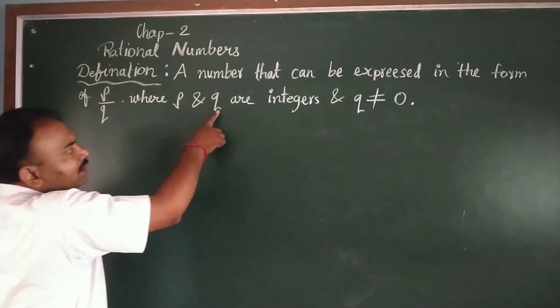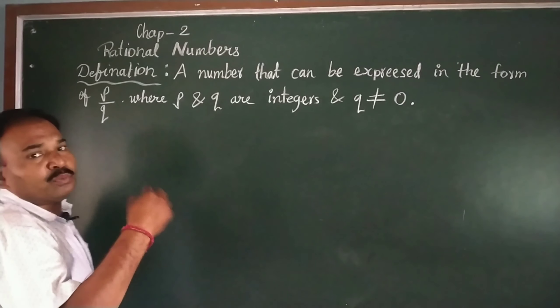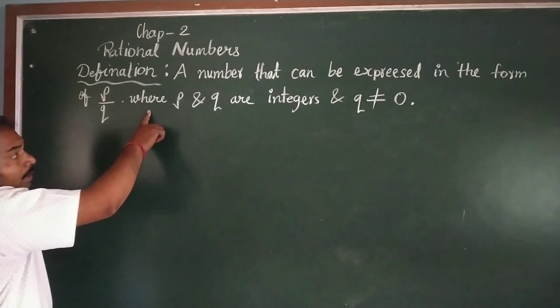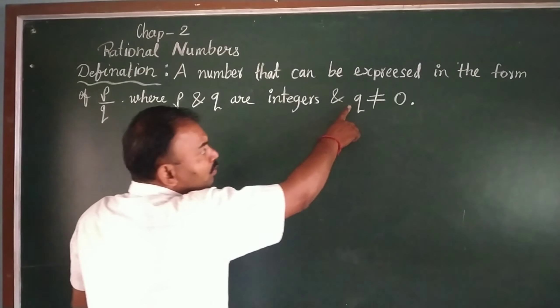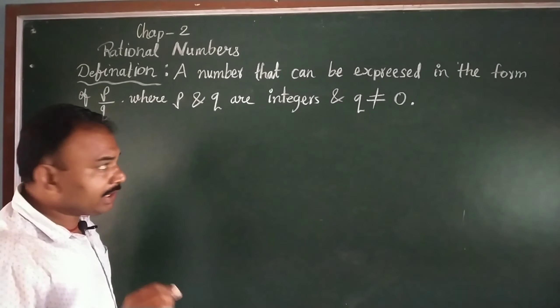Where P and Q are integers. If you know integers, they may be positive or negative. So here P and Q are integers and Q is not equal to 0. The value of Q is not equal to 0.